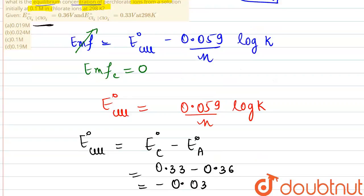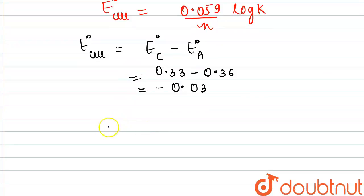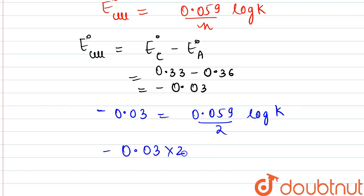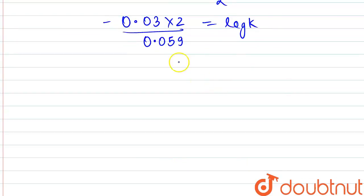Substituting into the Nernst equation: minus 0.03 equals 0.059 divided by 2, times log K. Rearranging: log K equals minus 0.03 times 2 divided by 0.059, which is approximately minus 0.06 divided by 0.059. Solving this, the equilibrium constant K comes out to be equal to 0.1.